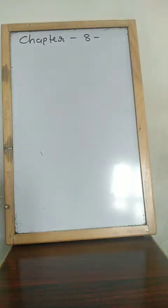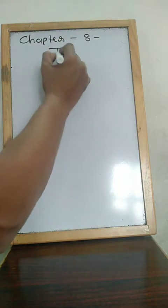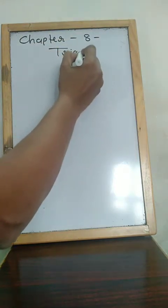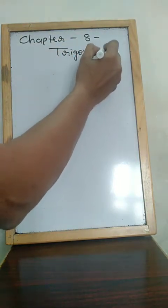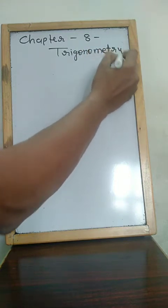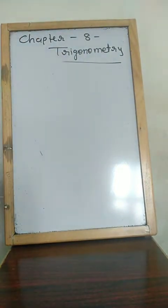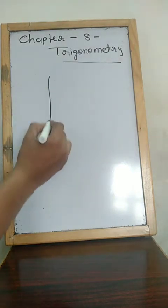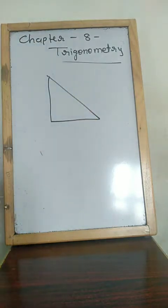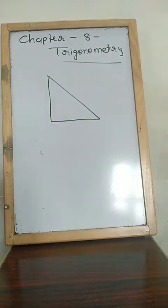Let's start. Chapter No. 8: Introduction of Trigonometry. Trigonometry depends on right angle triangles — trigonometry is totally dependent on right angle triangles.